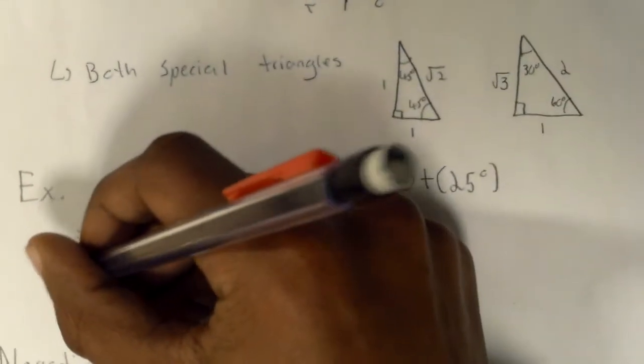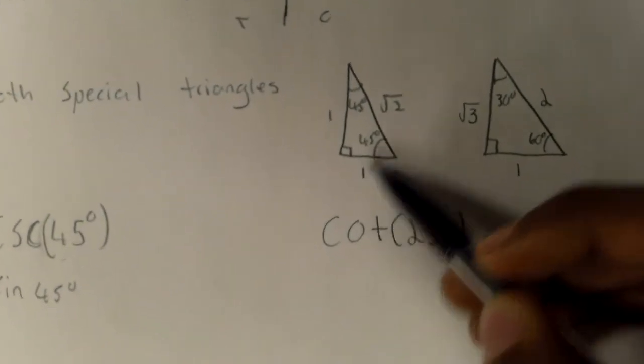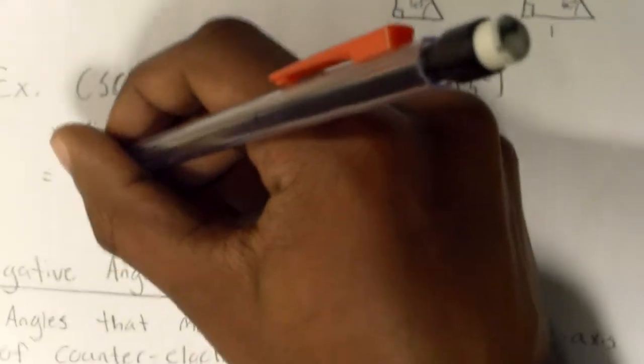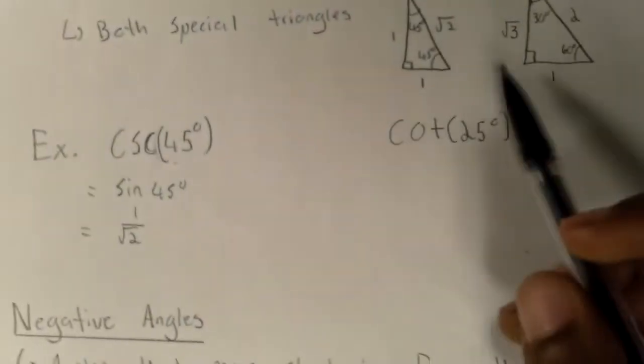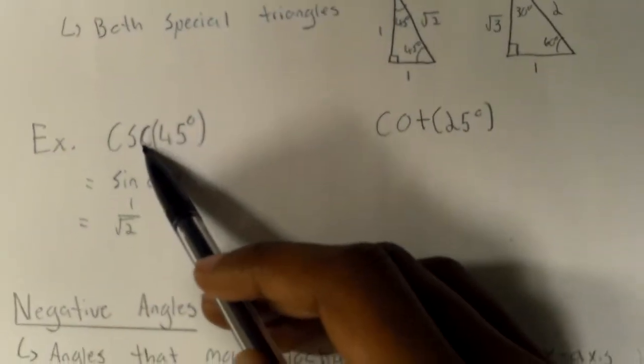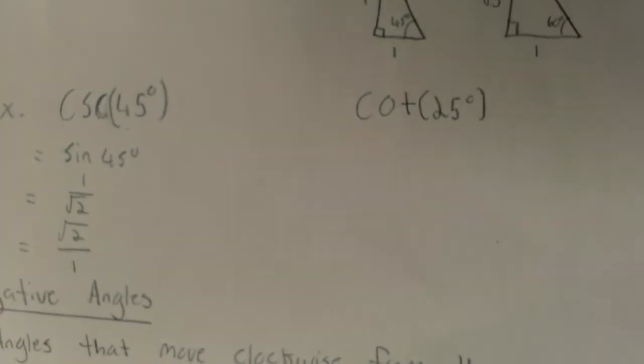And we know that sine of 45 degrees is equal to opposite over hypotenuse, so 1 over the square root of 2. And if we flip that back, if we find the reciprocal of that, that would be equal to the cosecant of 45. So you just flip it over. So the cosecant of 45 degrees is equal to the square root of 2 over 1.